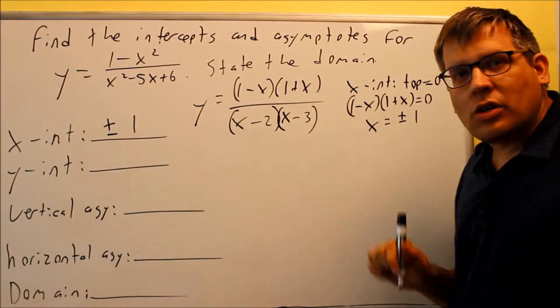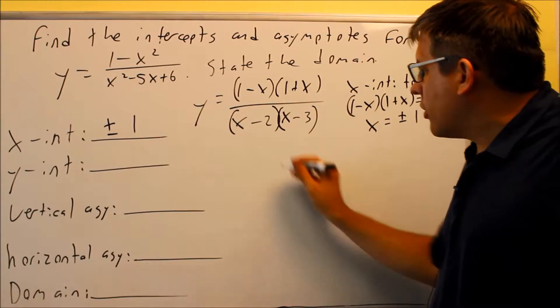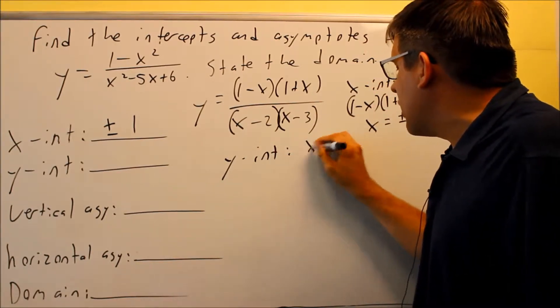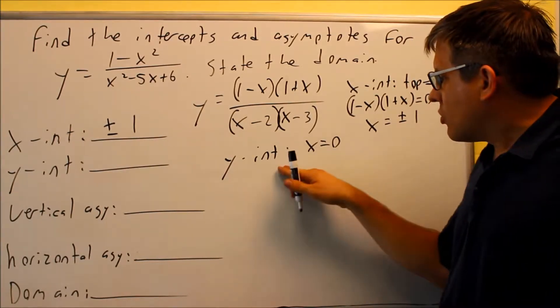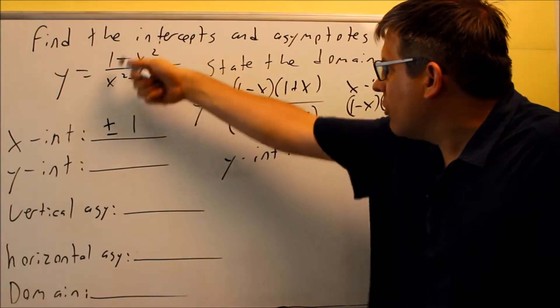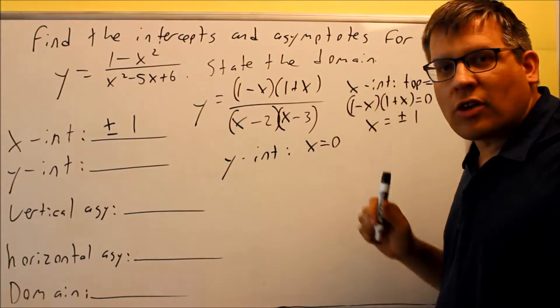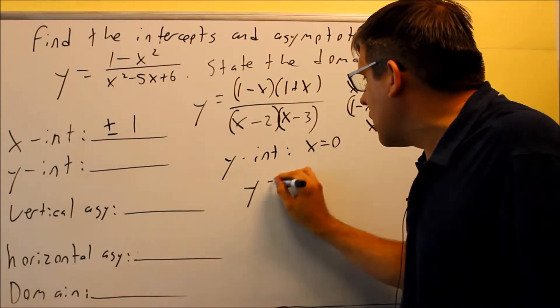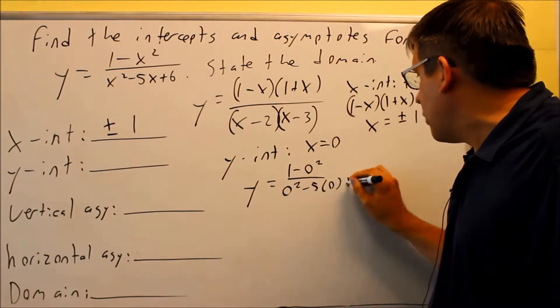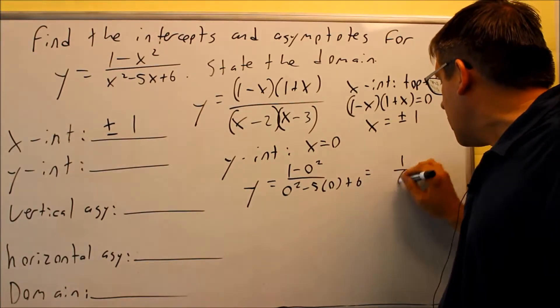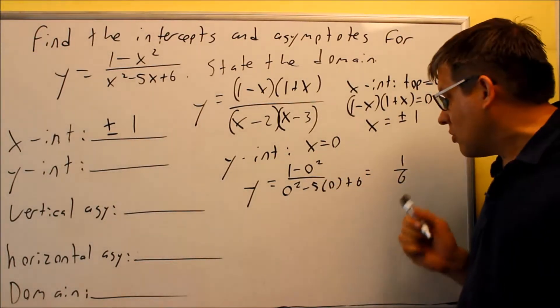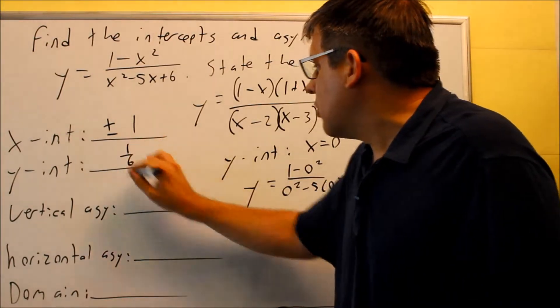Next thing we want to do is the y-intercept. Y-intercept is where you set the x equal to 0. So if we do that, we're going to put 0s in for this. We can even use the original one, or we can use the factored version. It doesn't matter which one. So I'll do the original one. 0 squared minus 5 times 0 plus 6. We get 1 sixth. When we put 0s in, everything else is going to cancel. So 1 sixth is going to go here.